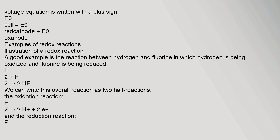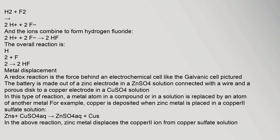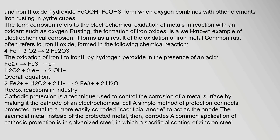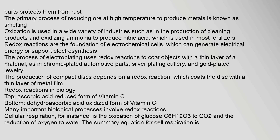A good example of a redox reaction is the reaction between hydrogen and fluorine, in which hydrogen is being oxidized and fluorine is being reduced. Another example involves zinc displacing copper ions: zinc metal reacts with copper(II) ions and liberates free copper metal. The ionic equation is Zn + Cu²⁺ → Zn²⁺ + Cu. As two half-reactions: zinc is oxidized (Zn → Zn²⁺ + 2e−) and copper is reduced. Corrosion refers to the electrochemical oxidation of metals in reaction with an oxidant such as oxygen. Rusting — the formation of iron oxides — is a well-known example of electrochemical corrosion, forming as a result of the oxidation of iron metal.